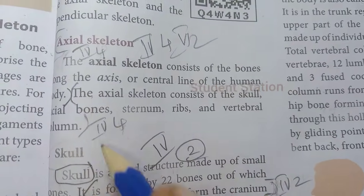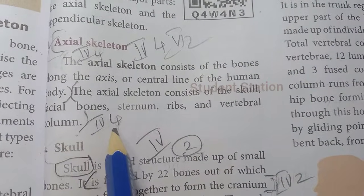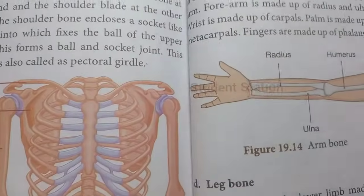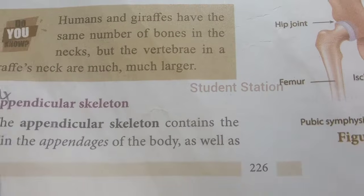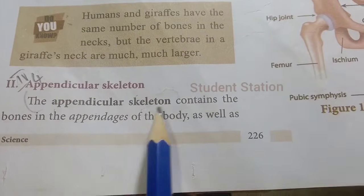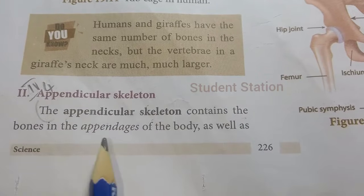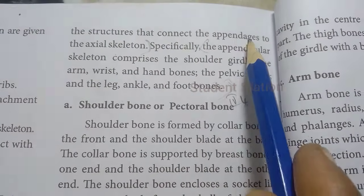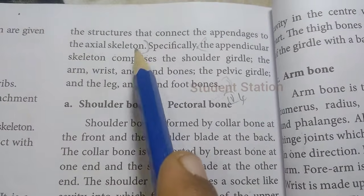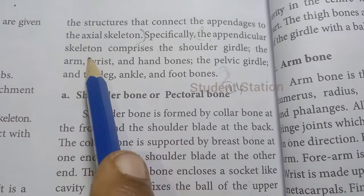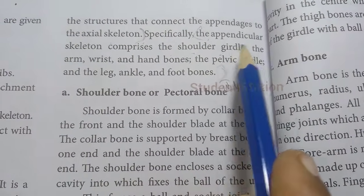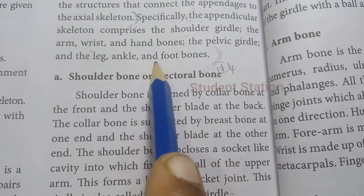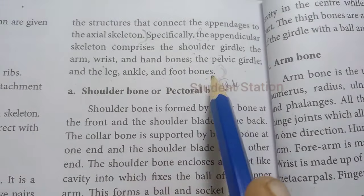For the appendicular skeleton, see page 226. First point: the appendicular skeleton contains the bones in the appendages of the body as well as the structures that connect the appendages to the axial skeleton. Second point: the appendicular skeleton comprises the shoulder girdle, arm, wrist and hand bones, the pelvic girdle, and the leg, ankle, and foot bones.